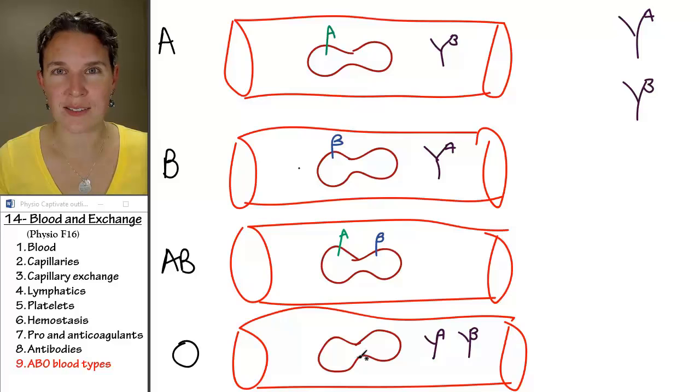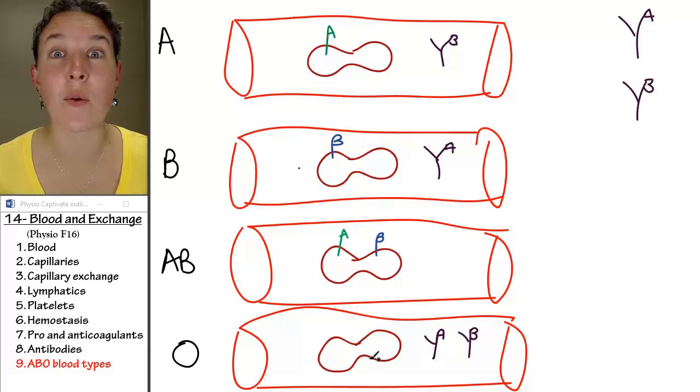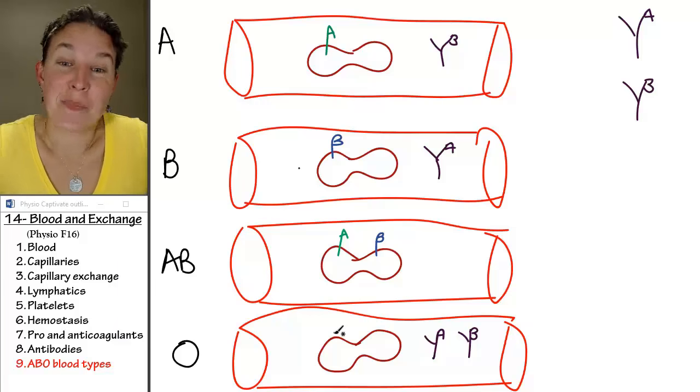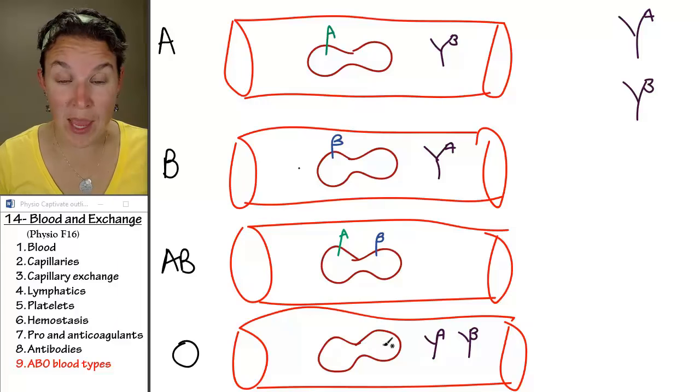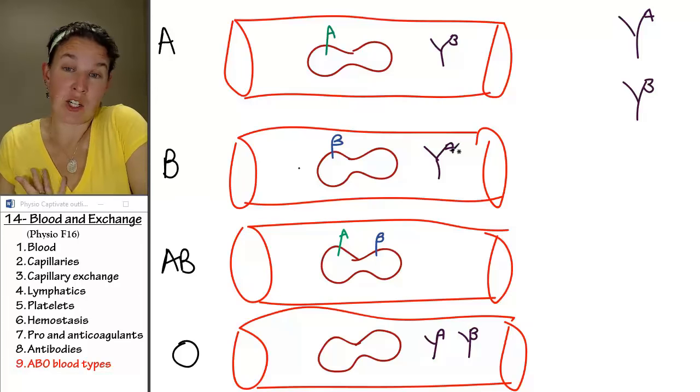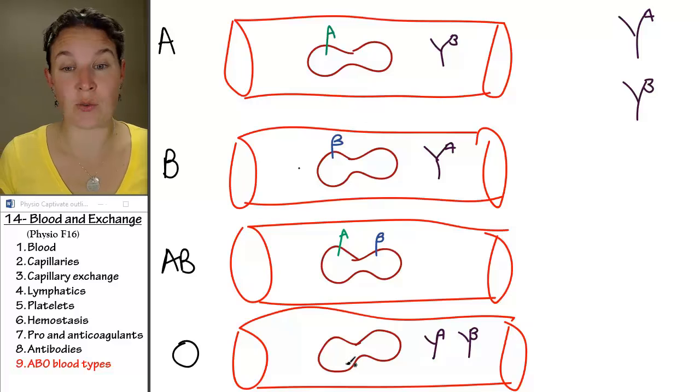What about a type O person? Who can they donate to? Who can they donate red blood cells to? Everybody. It's magic. They have no antigens on their red blood cells, so they can go anywhere. It doesn't matter how many antibodies you have in your blood. You aren't going to be able to kill anything, because there's nothing there to attach to.